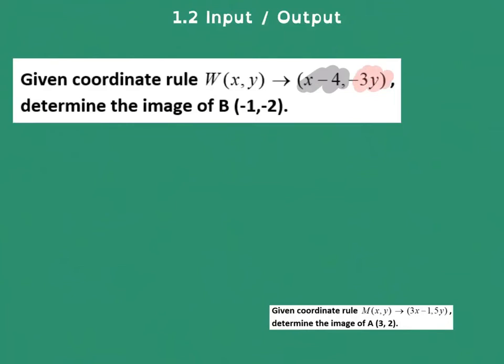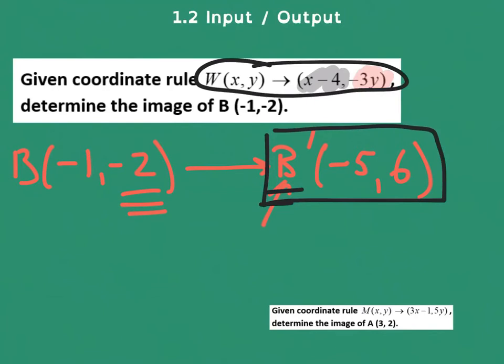So if we were starting with negative 1, negative 2, then the new, that's our b, our b prime, which means the image of b, would be that we would subtract 4, so that would be negative 5, and we would multiply this by negative 3, which would give us 6. So this is known as the image of b, b prime, and all we've done is applied the coordinate rule to obtain that.